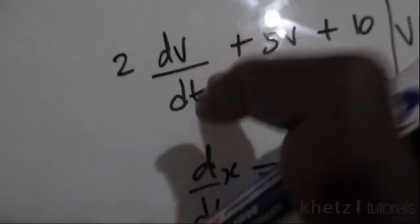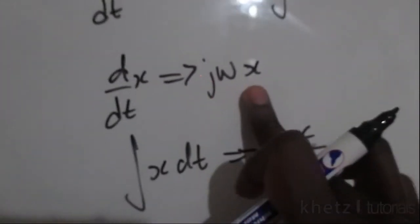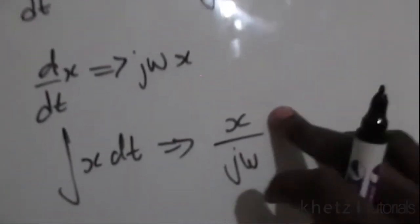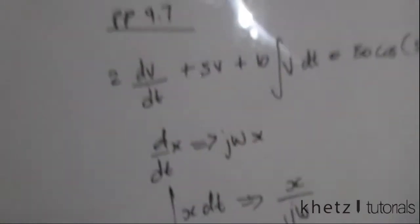So wherever we see dv/dt basically you're going to have jωv. Wherever we see an integral we're going to have v divided by jω because you're dealing with the variable v in this case. So let's proceed.